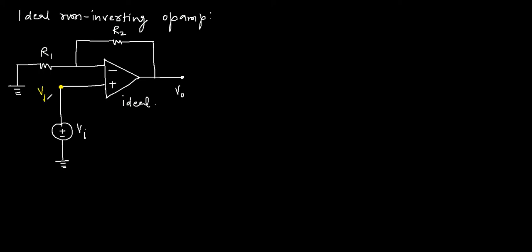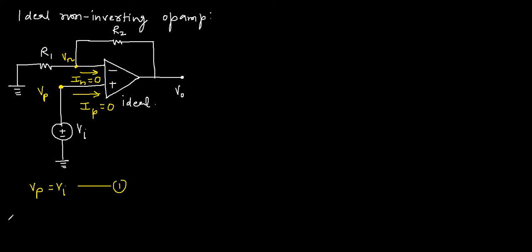The voltage at the non-inverting terminal is denoted by Vp, and the voltage at the inverting terminal is denoted by Vn. The current going into the non-inverting terminal of the ideal op-amp is zero, and the current going into the inverting terminal is also zero. Now we can see that the non-inverting terminal is connected to the input voltage, so Vp equals Vi. By the virtual short condition, Vn equals Vp, so Vn is also Vi.